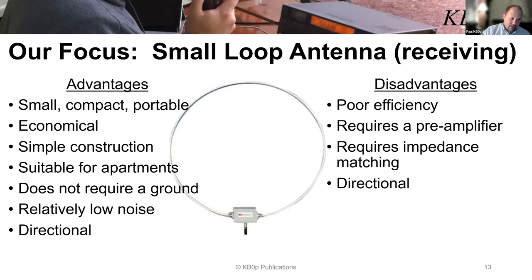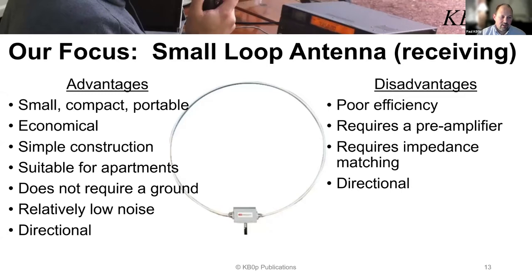Our focus in this presentation is just on small loop receiving antennas. This all started when I was building a receiving loop, showed it to Dave, and he suggested we do a presentation. The advantages of a small loop: it's small, compact, portable, economical, easy to build with simple construction. It's great for apartment dwellers or someone who wants to hide from the neighbors. It does not require a ground and is a relatively low-noise receiving antenna. It's also directional, which can be an advantage or a disadvantage.